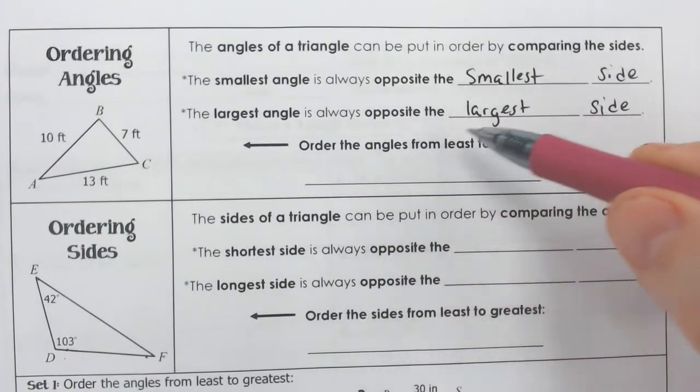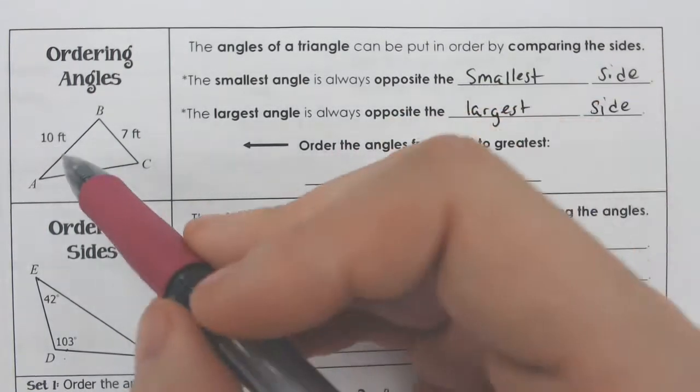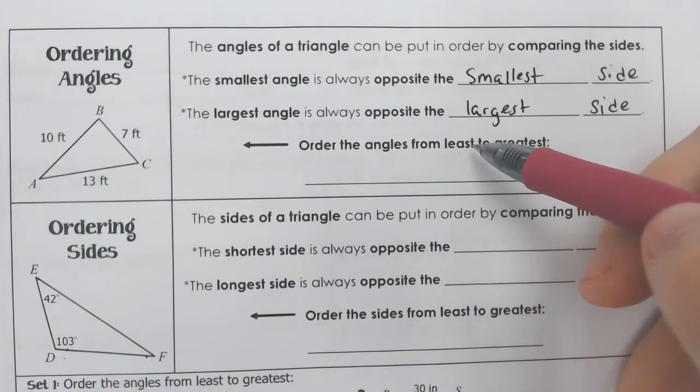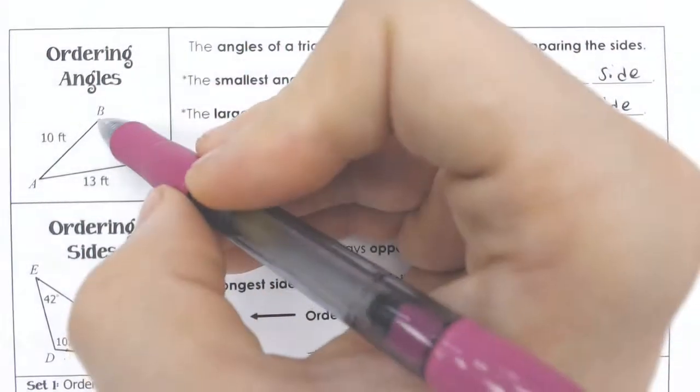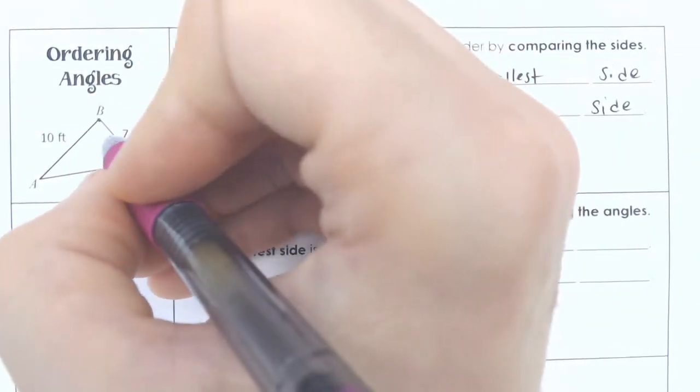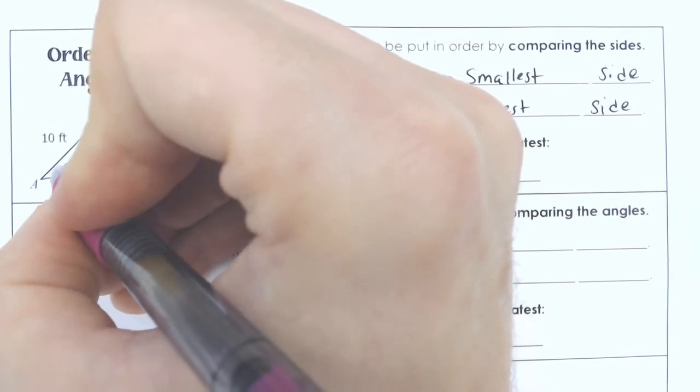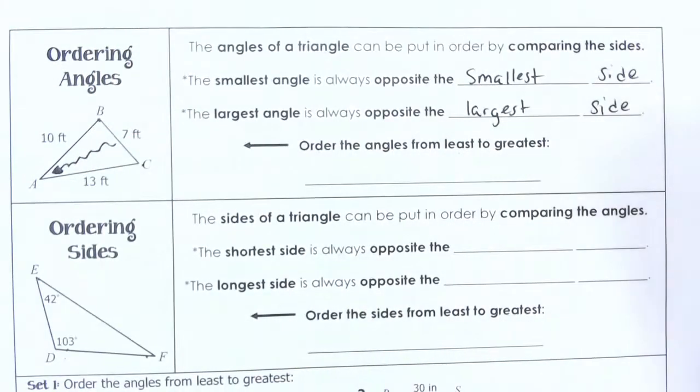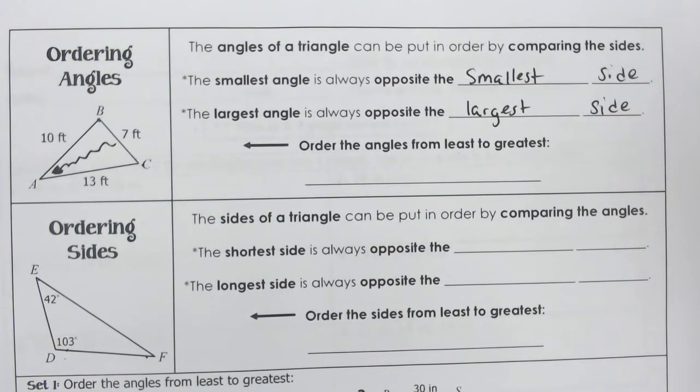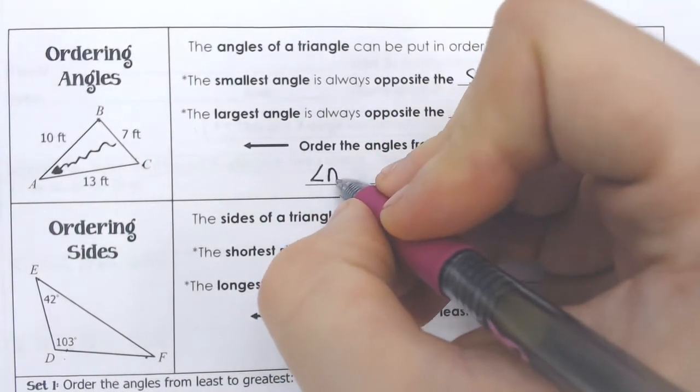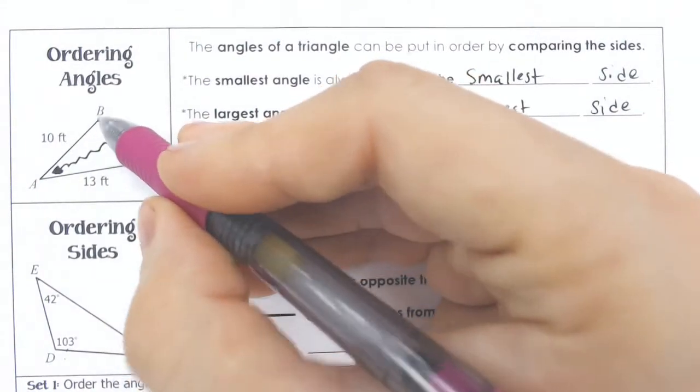If we had to order these angles from least to greatest, I'm going to look at what is the smallest side, which is BC. And I'm going to go across from that to figure out that angle A would have to be my smallest angle. So angle A is the smallest because it's across from the smallest opening.